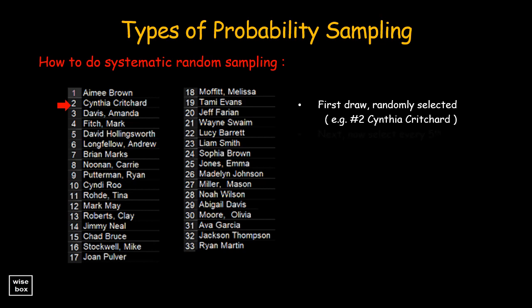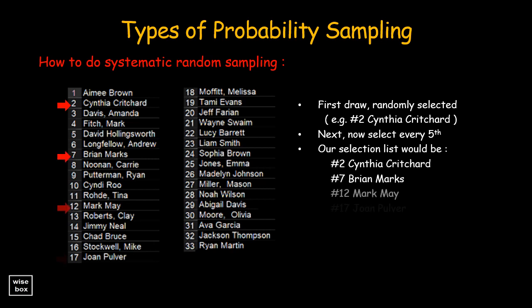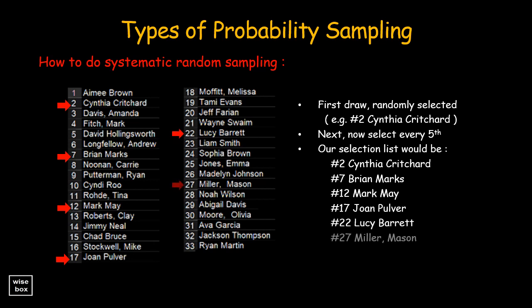Next, select every fifth element. Thus, our selection list would be number 2, number 7, number 12, number 17, number 22, number 27, and number 32.